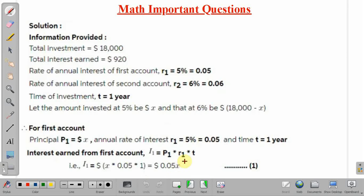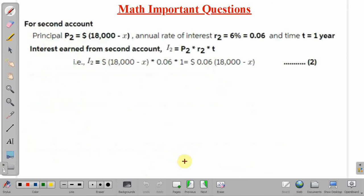Next, we will calculate interest obtained from the second account. Principal here is $18,000 minus X. Rate of interest is 6% and time is 1 year.